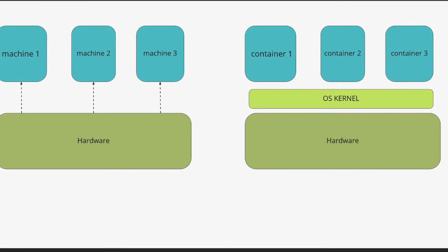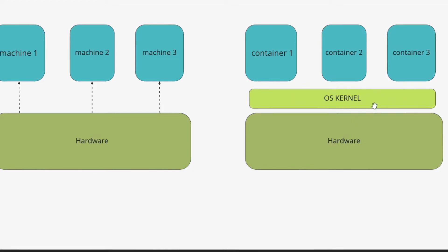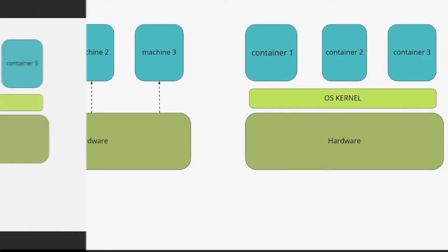If you look at the image closely, the picture on the left has a hardware-level abstraction, whereas the picture on the right has an operating system-level abstraction. So virtualization is a hardware abstraction, whereas containerization is an operating system abstraction.